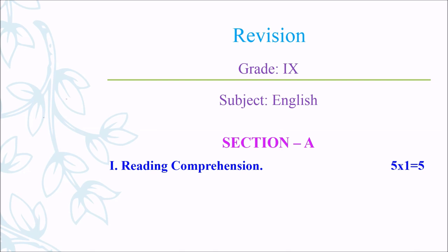This is your question paper pattern. Section A, Roman Letter 1, Reading Comprehension. One passage will be given in the question paper. Below that, you have 5 questions. First, you have to read the passage carefully, then understand it. You have to read the questions and answer them from the given passage. In Reading Comprehension, you will get 5 questions, each carrying 1 mark, so totally 5 marks.